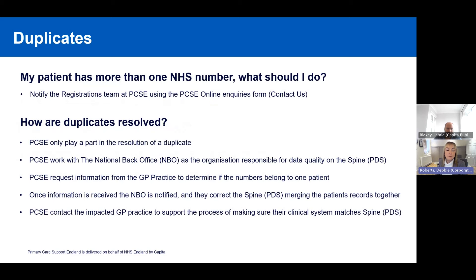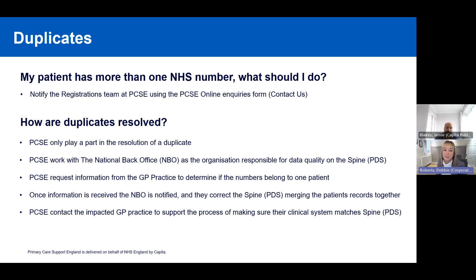If a patient comes to the practice with more than one NHS number, the preferred approach is to notify PCSE via the online forms on the Contact Us page of the PCSE website. That form has mandatory fields, so it collects the basic information needed, and including as much additional information as possible in the additional information box is all the better. I'll run through the online inquiries form at the end of the presentation to show everyone where to find it.